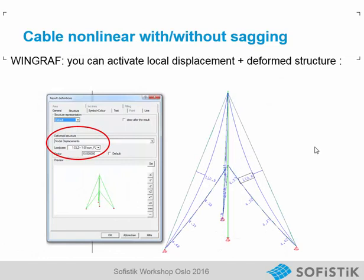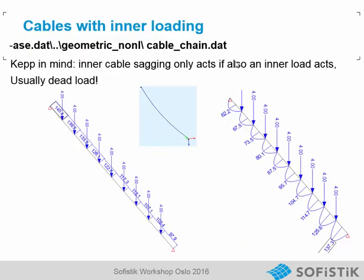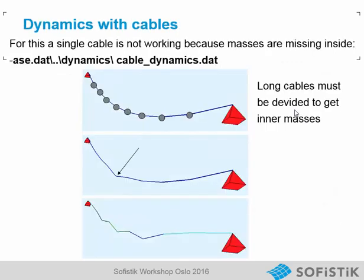But if we want, we can add this view in WinGraph, so we can make a plot of the cable sagging on the deformed structure and really see the correct effect. If we load a cable inside, we of course must have inner nodes. And if we are interested in the dynamics inside the cable, we also have to divide the cable so that we get masses inside the cable.